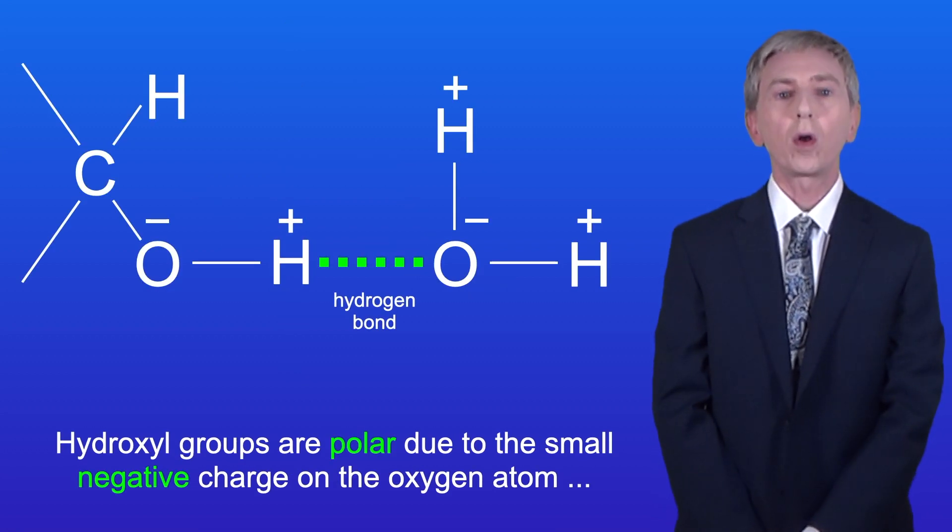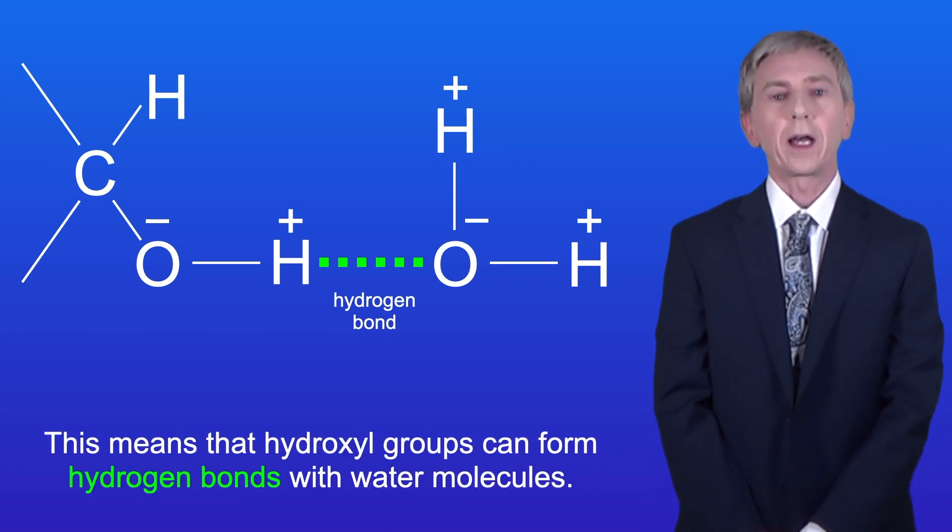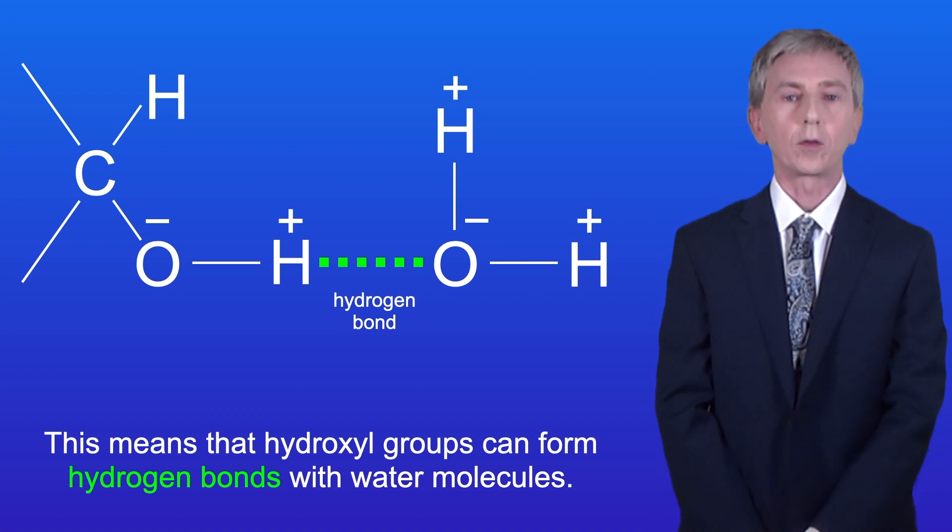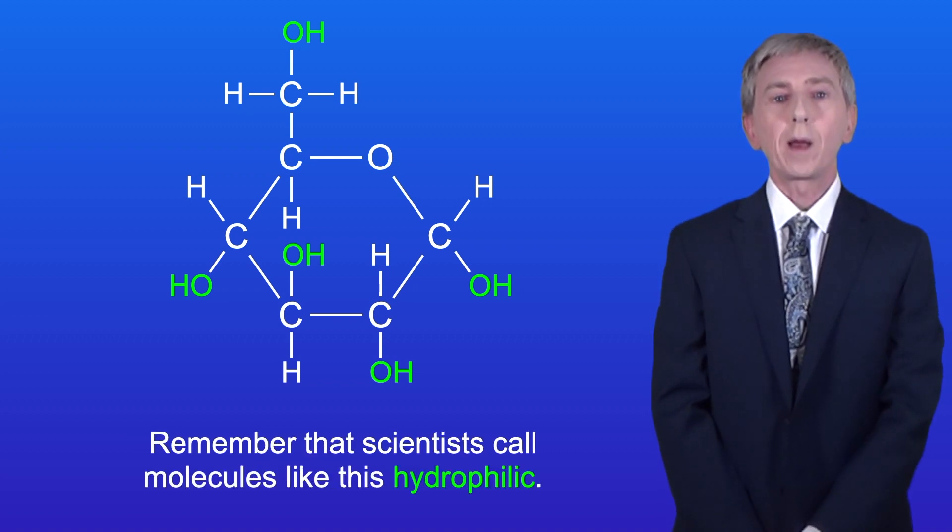Hydroxyl groups are polar due to the small negative charge on the oxygen atom and the small positive charge on the hydrogen atom. This means that hydroxyl groups can form hydrogen bonds with water molecules, and this makes glucose extremely soluble in water. Remember that scientists call molecules like this hydrophilic.